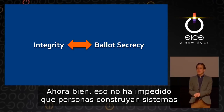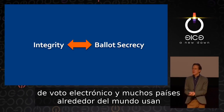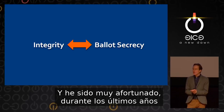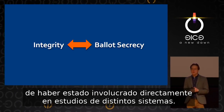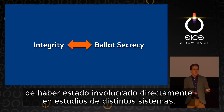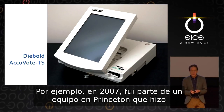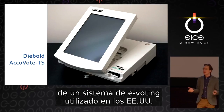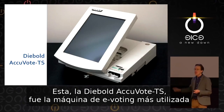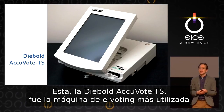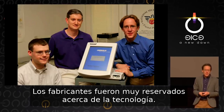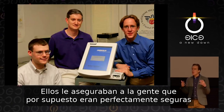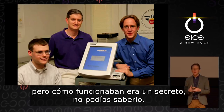That hasn't stopped people from building electronic voting systems, and many countries around the world use e-voting or are starting to try internet voting. In 2007, I was part of a team at Princeton that did the first hands-on security analysis by an independent party of an e-voting machine used in the US — the Diebold AccuVote TS, the most widely used e-voting machine in the United States at the time. The manufacturer was very secretive about the technology, assuring people it was perfectly secure but saying how it works is a secret.